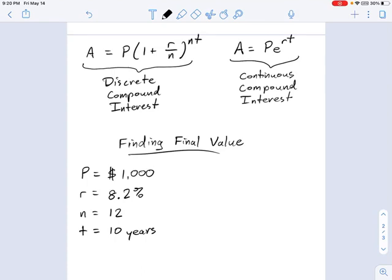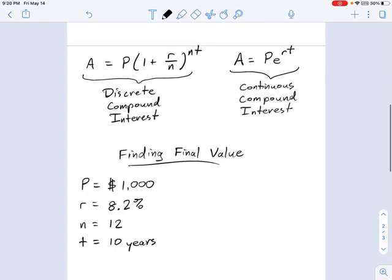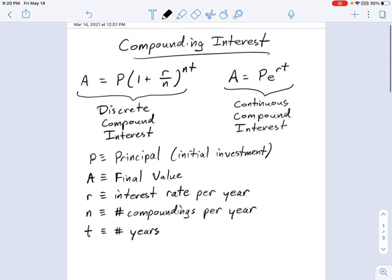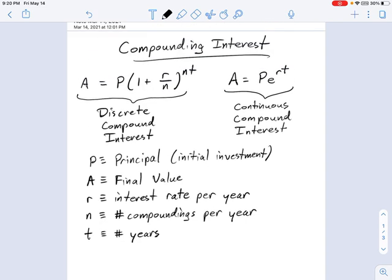So in this video, I'm going to introduce the concept of compound interest, and there are two types of compound interest formulas. There's discrete compound interest, which is this formula on the left, and there's continuous compound interest formula on the right.